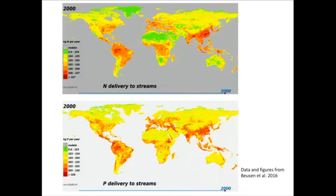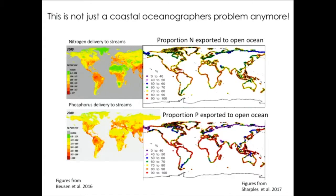Of course, these changes are not uniform around the world. We know we have lots of nitrogen hotspots and lots of phosphorus hotspots. While they're mostly the same, they're not exactly the same. This is not just a coastal oceanographer's problem anymore — it is an oceanographic problem, because a recent paper by Sharples estimates the proportion of nitrogen and phosphorus from coastal systems exported to the open ocean. Where you see the ribbon running orange or red, there is a high proportion of export to the open ocean.